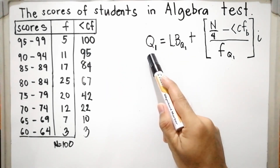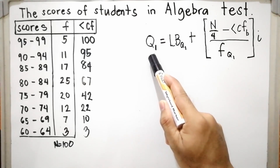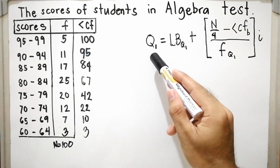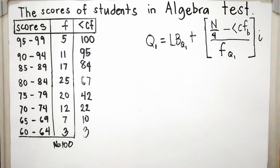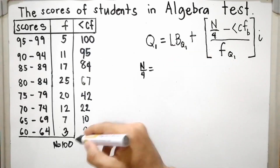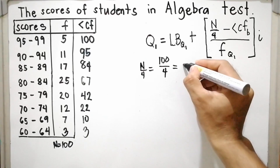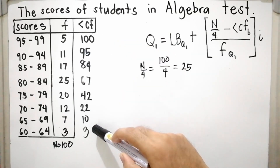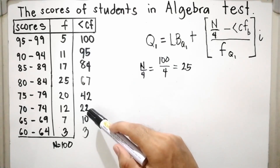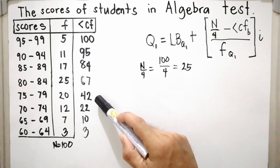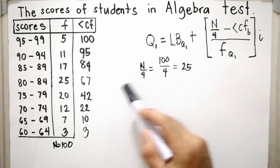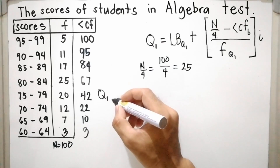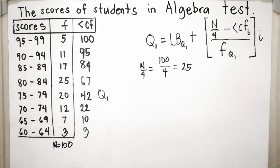Now let us find the first quartile, Q sub 1, also called the lower quartile. To locate Q sub 1, the formula is N over 4, which is 100 divided by 4, equal to 25. Locate 25 in the less than cumulative frequency column. Since 25 is not included in 3, 10, or 22, it is included in 42. So the Q1 class is 75 to 79, and the frequency is 20.